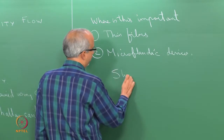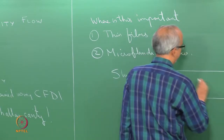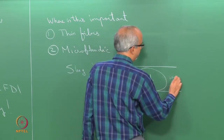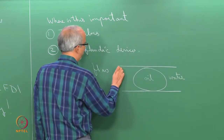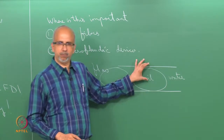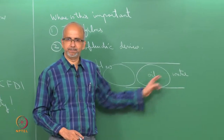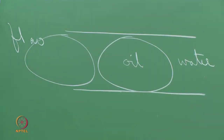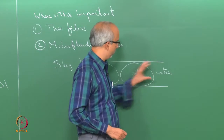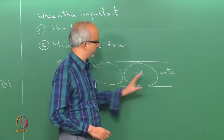In microfluidic devices, for example, we spoke earlier about something called a slug flow. The basic idea in a slug flow situation is: suppose you have a two-phase flow, say oil and water. You would have oil slugs almost occupying the entire channel, separated by water. There is a continuous stream of oil slugs flowing, and of course water is also present and flowing.